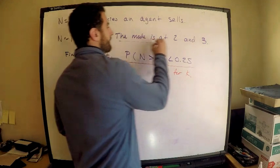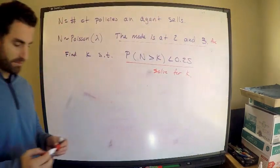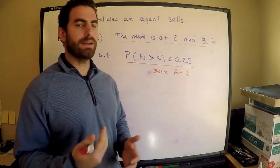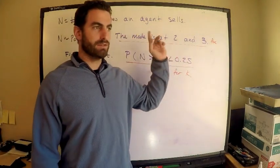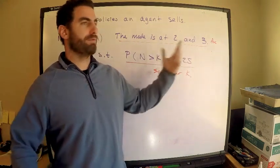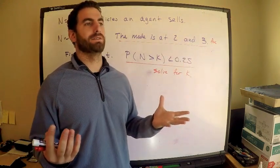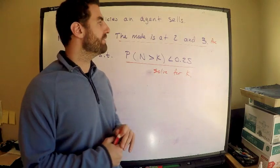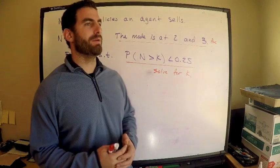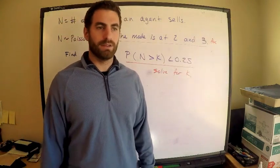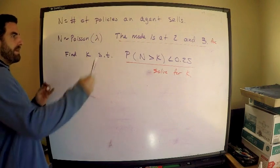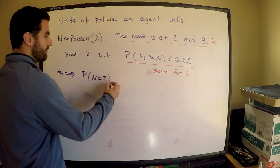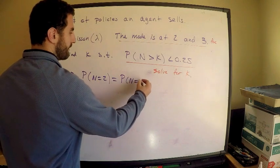We need to first use the mode information. The mode is at 2 and 3. That means when the number of policies an agent sells is 2, and when 3 is the number of policies they sell, those two probabilities are the highest. We know those must be equal because the mode is the largest probability — the value of the random variable which gives you that largest probability. So from that condition, this implies that P(N=2) = P(N=3).